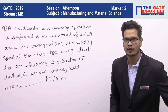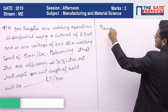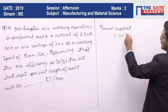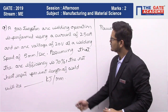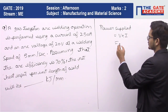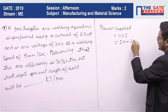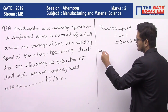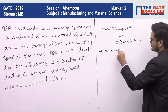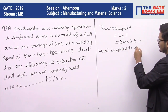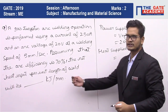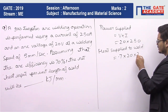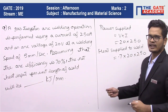Now, power supply is V into I. V is 30 volts, I is 250 amperes, so power is 30 into 250. The heat supplied to the weld is 70% of power supplied, which is 0.7 into 30 into 250.